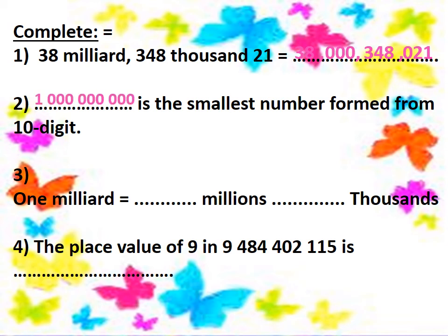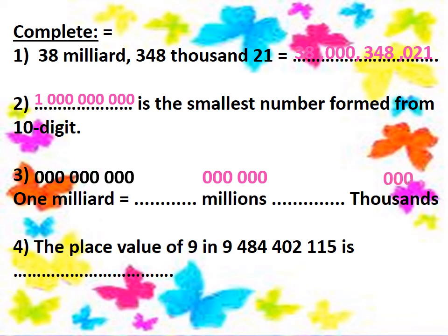Number two: what is the smallest ten-digit number? One billion. Number three: one billion equals how many millions? Equals how many thousands? One billion has nine zeros, one million has six zeros. We cancel six zeros with six zeros — the rest is three, so one billion equals one thousand million. If we then compare one million and one thousand, we cancel three zeros with three zeros.